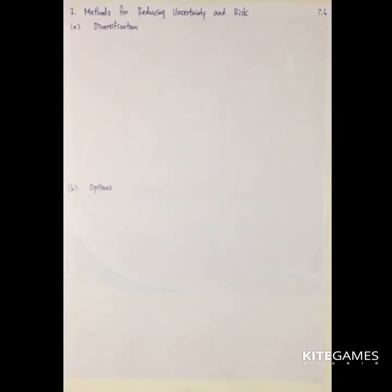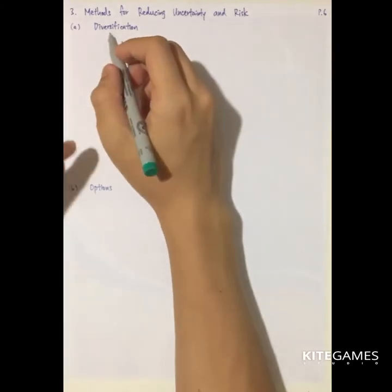Next we will talk about some measures to reduce uncertainty. So first one is called diversification.